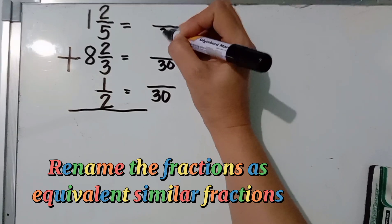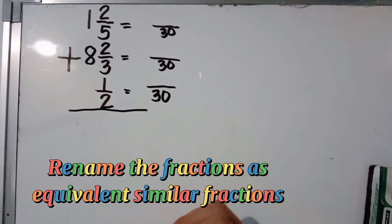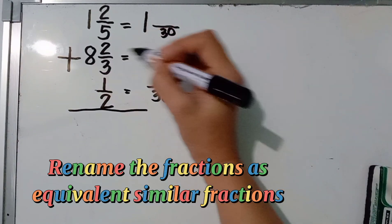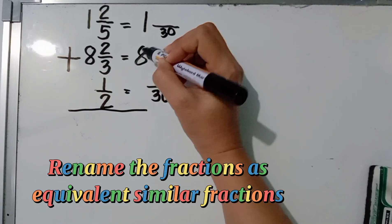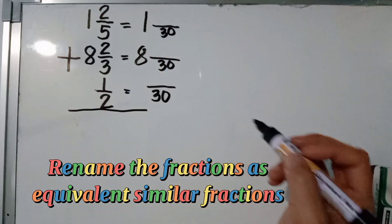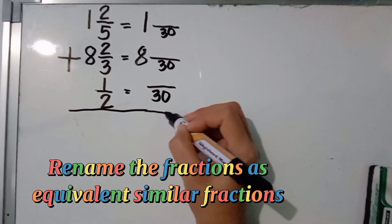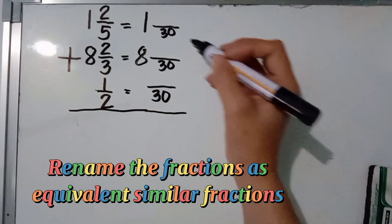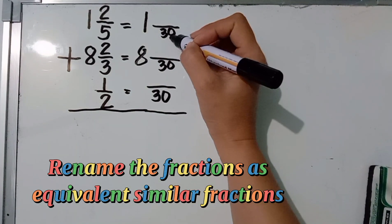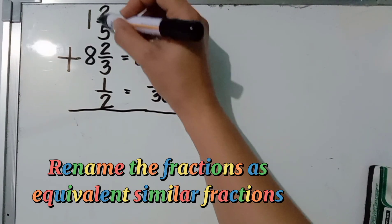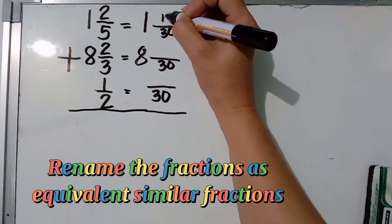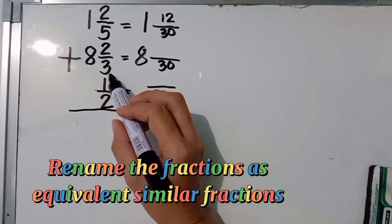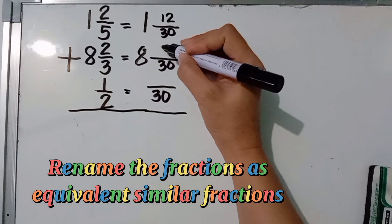Write the LCD of 30, and just copy the whole numbers 1 and 8. For the third fraction, there is no whole number. Now divide: 30 divided by 5 is 6, then 6 times 2 equals 12. 30 divided by 3 is 10, then 10 times 2 equals 20. 30 divided by 2 is 15, then 15 times 1 equals 15.